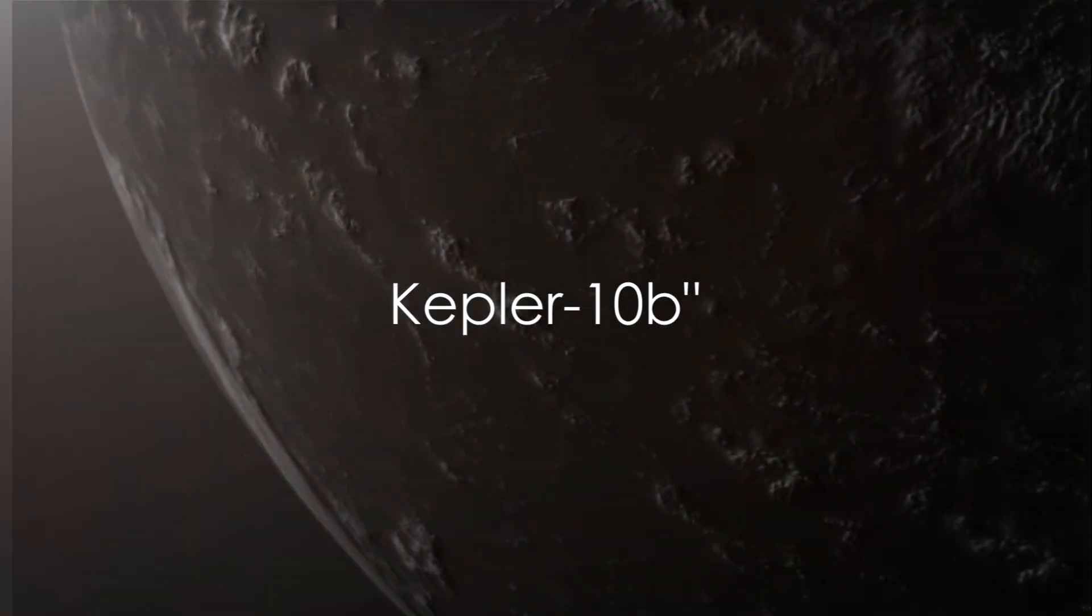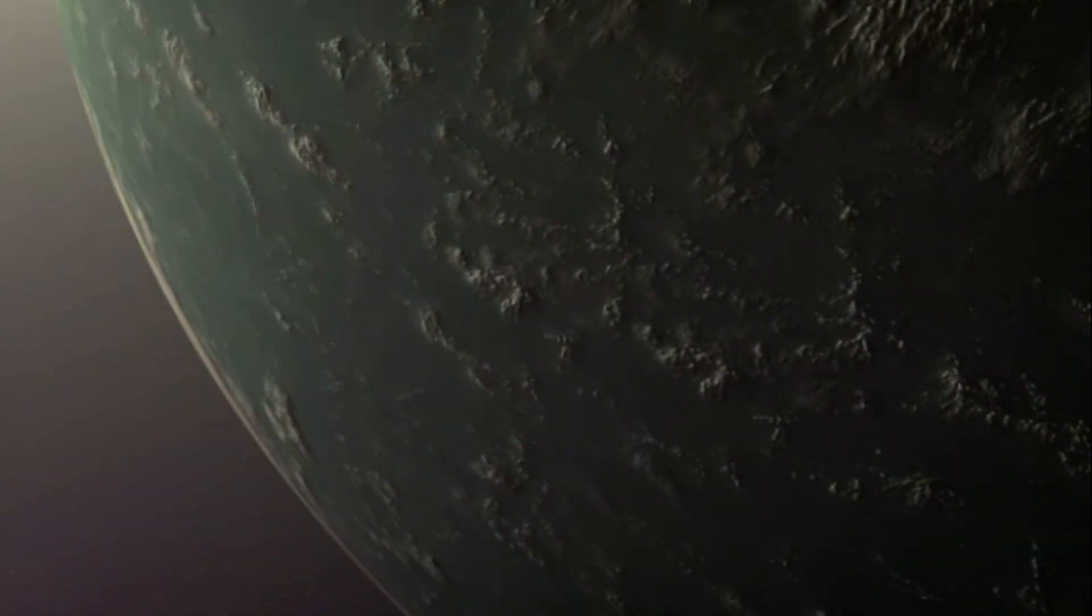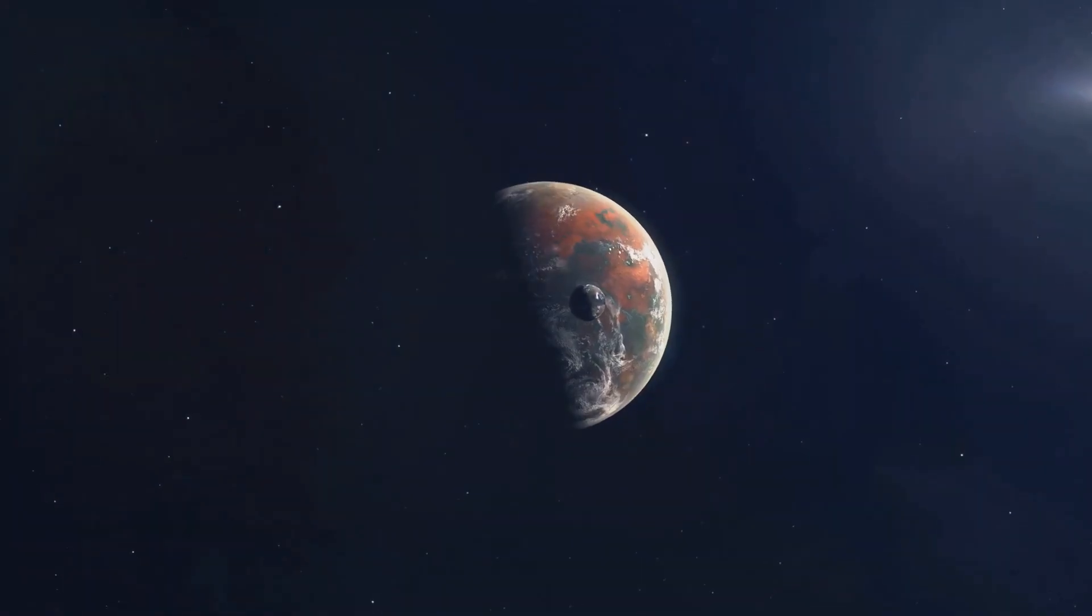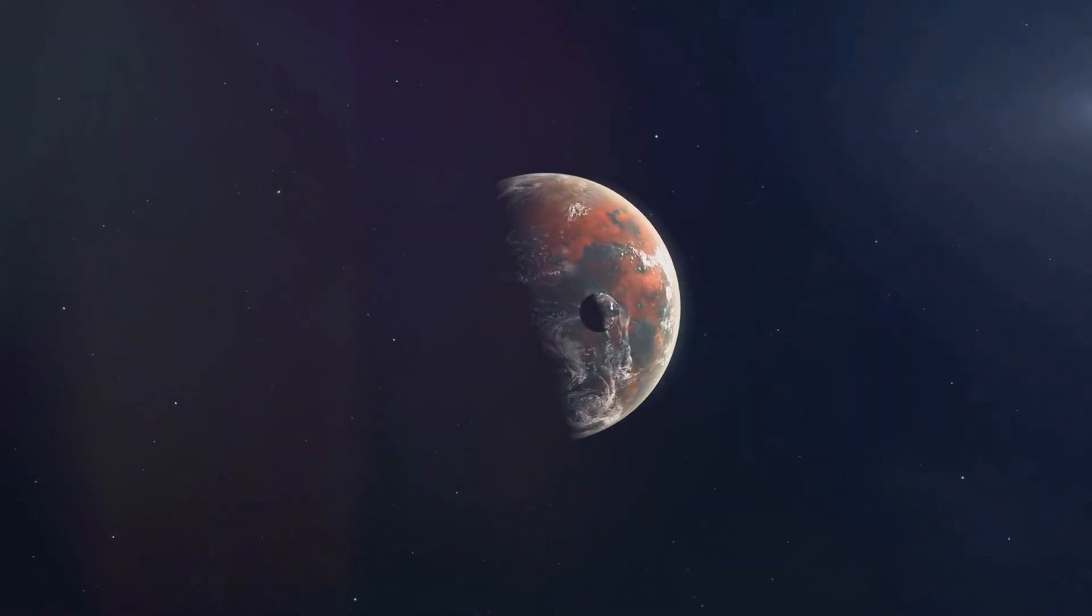Starting our countdown at number 5 we have Kepler-10b, the first confirmed rocky exoplanet. This fascinating celestial body lies approximately 560 light-years away from Earth. Now what makes Kepler-10b extreme? Well, it's a world that's not for the faint-hearted.